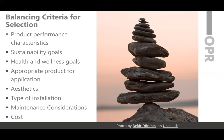Balancing criteria for selection includes evaluating product performance characteristics in conjunction with sustainability, health, and wellness goals. Appropriate product for the application is essential, particularly when looking at different types of settings. Aesthetics, of course, are a large portion of what designers do.